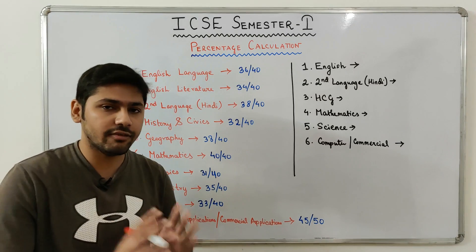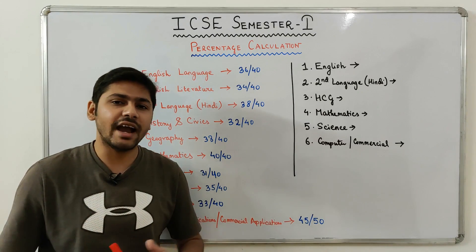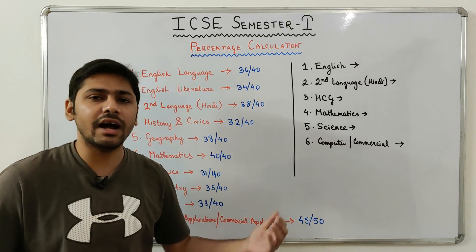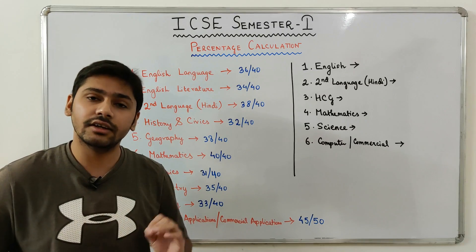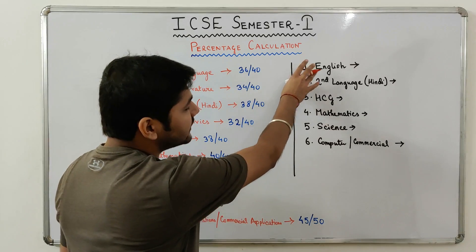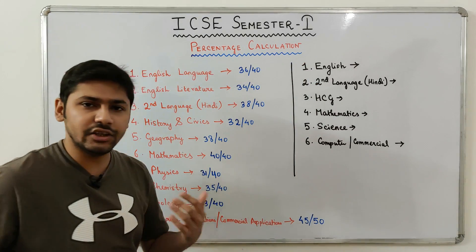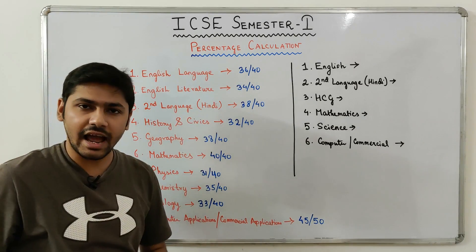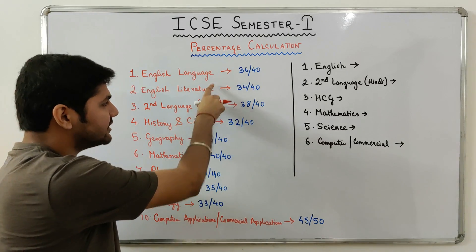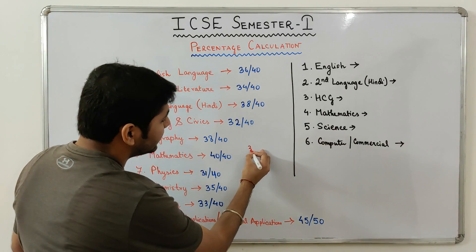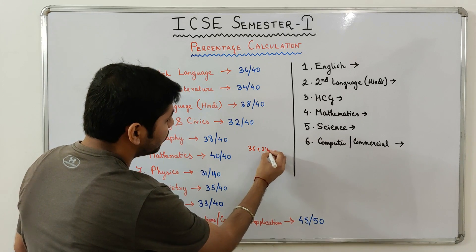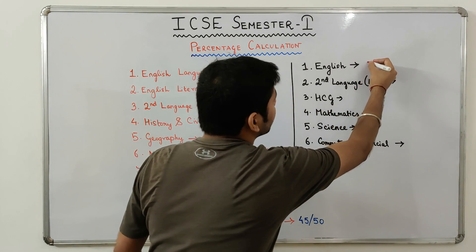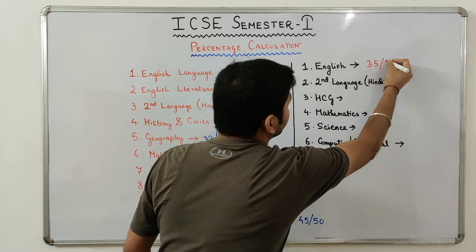So how to calculate the final percentage using the Best of 5 method? The final percentage is not calculated directly from these marks — first we have to aggregate the marks for a few subjects. The first subject is English, which is the combination of English Language and English Literature, so for English we take the average: 36 plus 34 divided by 2 equals 35. So in English you will have 35 out of 40.